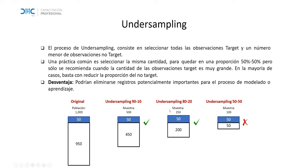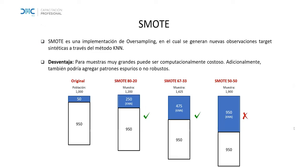La idea es cambiar un poco la proporción y empezar a probar. Hay un método que se ha hecho bastante popular llamado SMOTE. En este método se obtienen nuevas muestras utilizando los datos originales de la clase minoritaria — no se remuestrea — sino que se genera a través del algoritmo del vecino más cercano, haciendo algo equivalente a una interpolación entre observaciones de la categoría target.